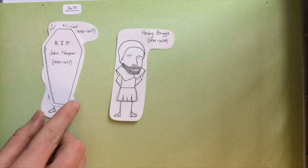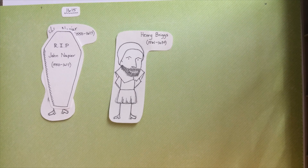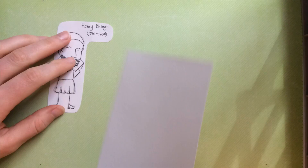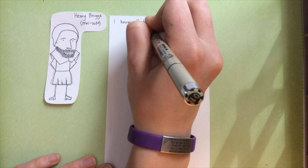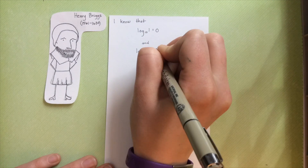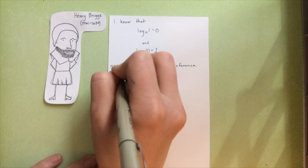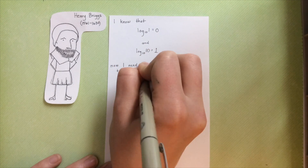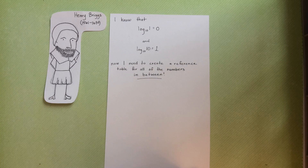Unfortunately, Napier passed away before they could rewrite the tables, leaving Henry Briggs to do much of the work on his own. To understand the content of the tables, think about what you already know about logarithms: log base 10 of 1 equals 0, and log base 10 of 10 equals 1 — but what about everything in between?